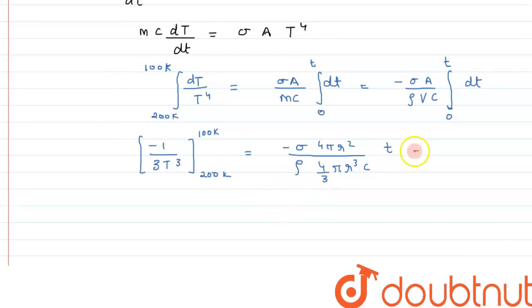From here, if we solve it further, we can see the value of 4 gets cancelled out, the value of π gets cancelled out. One r is left, so we are left with -σt divided by ρ, and 3 will go up. We are left with r and c. From here we can also cancel out the negative sign.